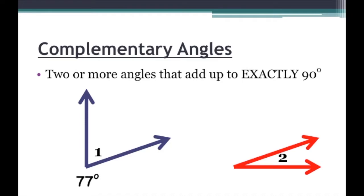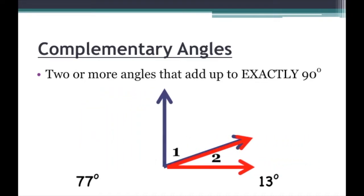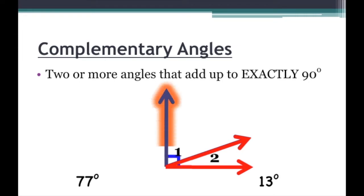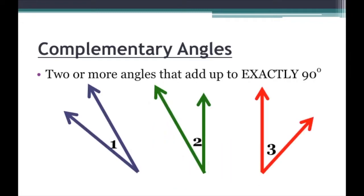Again, we have angle 1 and angle 2. Let's say angle 1 is 77 degrees and angle 2 is 13 degrees. We put them together and we get a 90 degree angle. So angles 1 and 2 are complementary. And it doesn't matter if we have 2 angles or 20 angles — as long as the angles together add up to 90 degrees, they are complementary to each other.